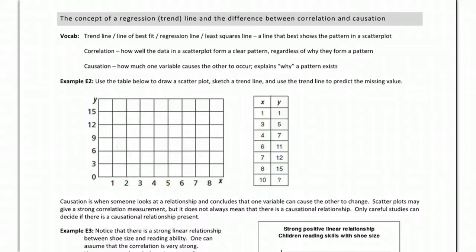Let's look at regression lines and try to understand the difference between correlation and causation. These are two concepts that if you walk away with anything from any math class, understanding these two and their differences is probably one of the most important things you can do.